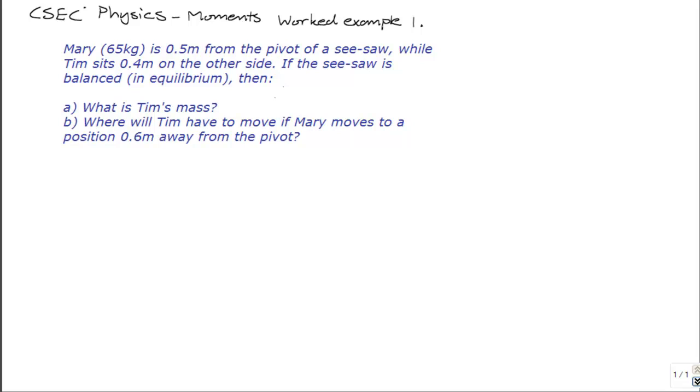So we're going to do this question, which is on the screen. It says, Mary, who has a mass of 65 kilograms, is 0.5 meters from the pivot of a seesaw, while Tim sits 0.4 meters on the other side. If the seesaw is balanced or in equilibrium, then A, what is Tim's mass, and B, where will Tim have to move if Mary moves to a new position, 0.6 meters away from the pivot?